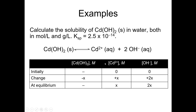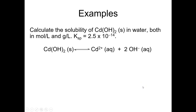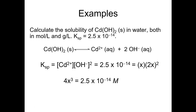Substituting into the expression: cadmium is X and hydroxide is 2X, raised to the second power. So KSP = X · (2X)² = 4X³. For silver chloride, KSP was simply X², but for cadmium hydroxide, KSP = 4X³. Setting 2.5 × 10⁻¹⁴ = 4X³ and solving, X = 1.8 × 10⁻⁵ M. That is the molar solubility of cadmium hydroxide.